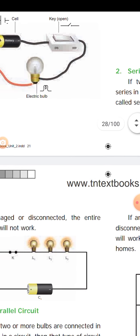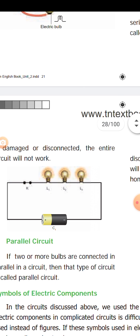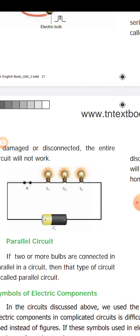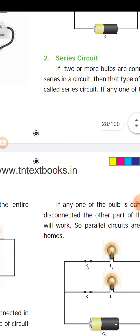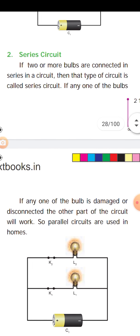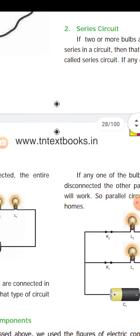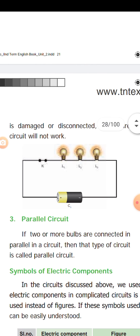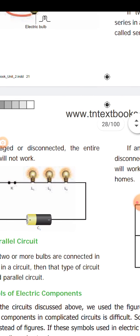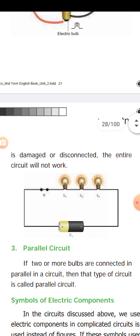If two or more bulbs are connected to a continuous circuit, and if any one of the bulbs is damaged or disconnected, then the entire circuit will not work. If one bulb is connected to another bulb, it will work out. This is series.